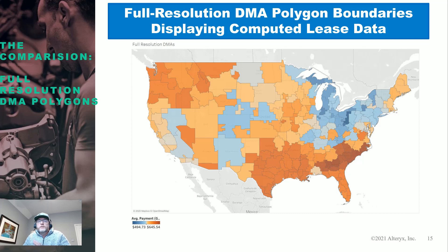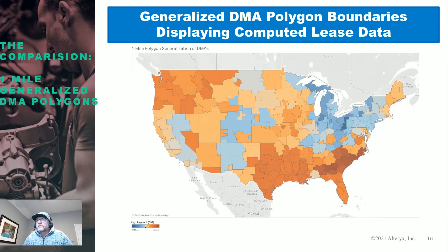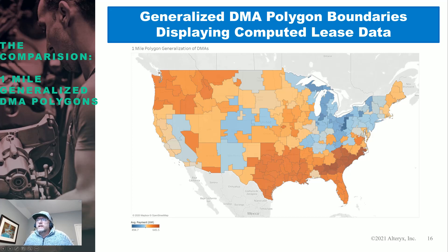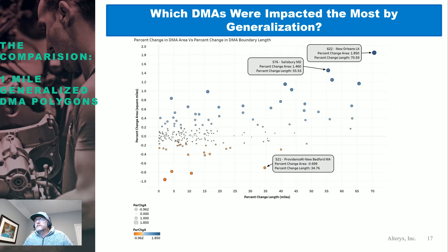Here's a picture of computed leases by DMA using full-resolution 76-megabyte coverage. And here is the one-mile generalized case. If you go back and forth, you really have to study to see any differences. For most DMAs that have straight lines, there are going to be no differences. It's only where you have really complicated boundaries — like down in New Orleans where you have the Mississippi River Delta — that you'll notice any change.